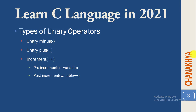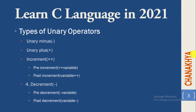It depends on the choice of the programmer: if they want to first increment then assign the value, they use pre-increment; if they want to first assign the value then increment, they use post-increment. Similarly, we have one more unary operator called the decrement operator, used to decrease the value of a variable by one. It can also be used in two notations: pre-decrement, which first decreases then assigns, and post-decrement, which first assigns then decrements.